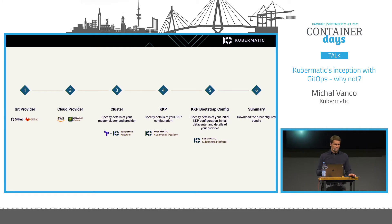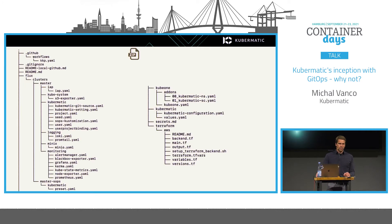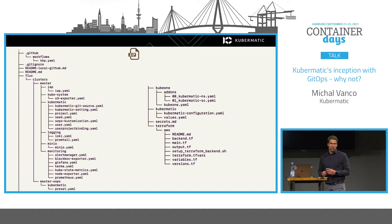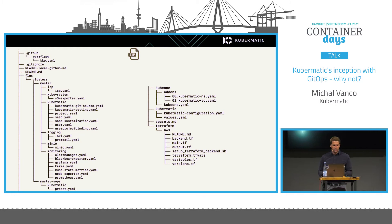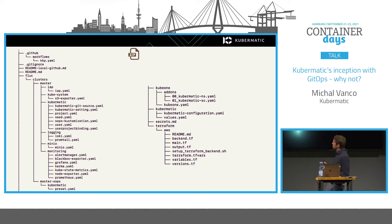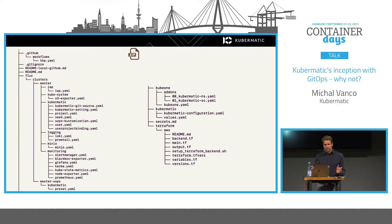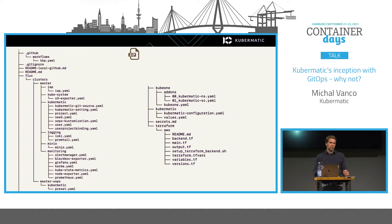At the end you hit summary, confirm, and download a zip archive. The archive contains generated files: directories for Terraform, KubeOne configuration, Kubermatic configuration, and a Flux directory. Some YAML files contain encrypted values because the goal is to push everything to the repository. The master directory represents the name of your first cluster, with a bunch of YAML declarative examples.